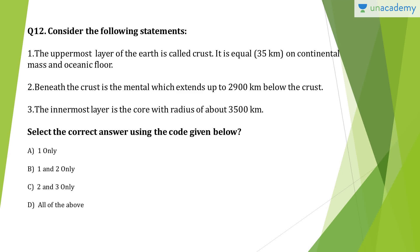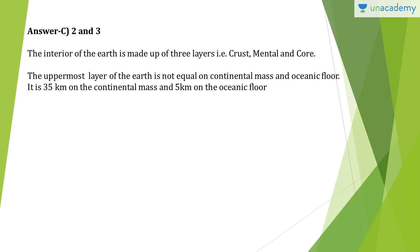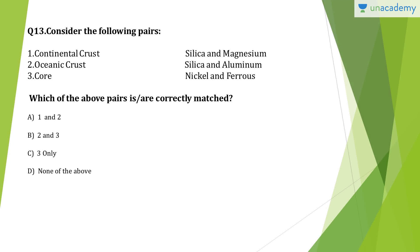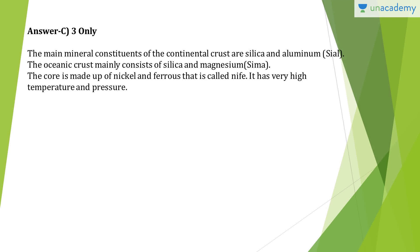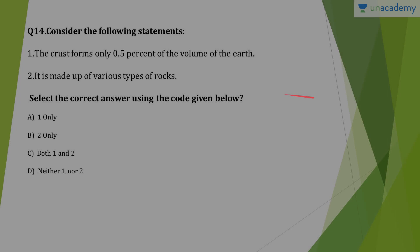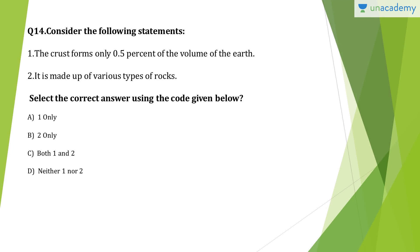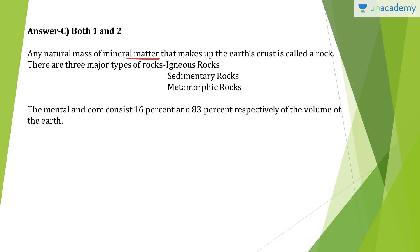Question 15: Igneous rocks are formed when molten silica cools — that is wrong; it is molten magma. These rocks are called primary rocks — yes. Answer is B, two only. Question 16: Answer is C, both one and two. Igneous rocks are formed when molten magma cools and becomes solid. Intrusive rocks cool deep inside the earth; extrusive rocks like basalt cool fast on the surface. Basalt rocks form the Deccan Plateau. Granite is an example of intrusive igneous rock. Question 17: In sedimentary rocks, remains of dead plants and animals are trapped — correct. Igneous and metamorphic rocks can be changed into sedimentary rocks — correct. Answer is C, both one and two. Remains of dead plants and animals are found as fossils in sedimentary rocks. Metamorphic rocks under great heat and pressure can change; clay changes into slate and limestone into marble.